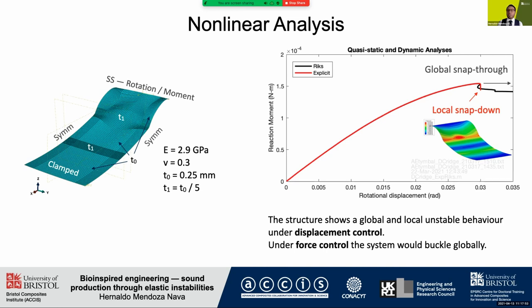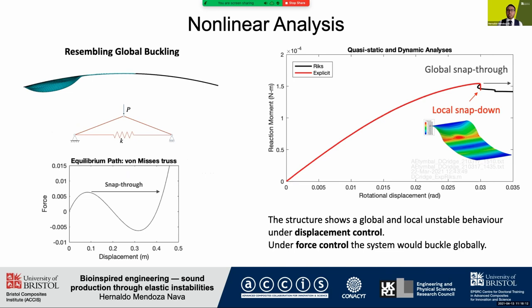The local instability is reached only under displacement control, producing a dimple at the reduced thickness region. The explicit analysis shows that this local instability occurs as a dynamic snap-down, and global buckling can occur as a dynamic snap-through only under load control. This behavior could be represented by a truss mechanism resembling the cross-section of the geometry. Therefore, we found that the double curved geometry can introduce a local instability under displacement control, which appears only at sufficiently small thickness ratio over the region of reduced thickness.